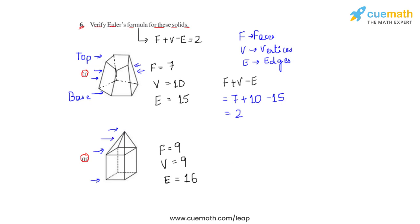Hence, let us take now the left hand side of Euler's formula, which is F plus V minus E, and let us substitute these values to verify Euler's formula. If we do that, we get here 9 plus 9 minus 16, which will give us again a 2.